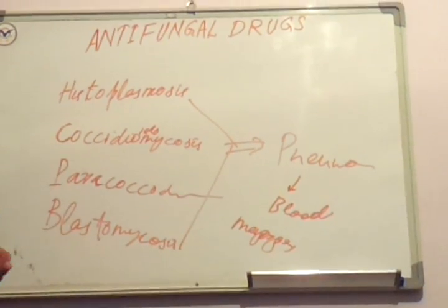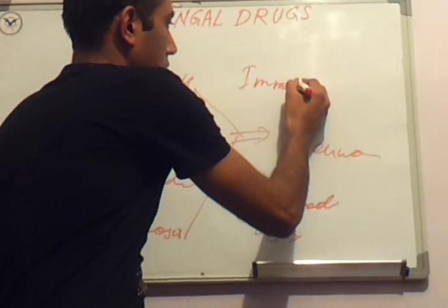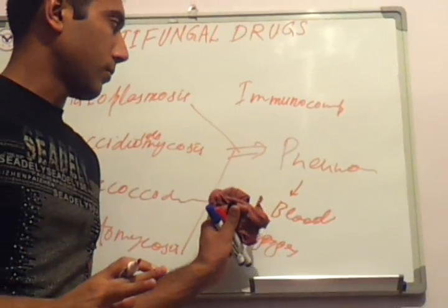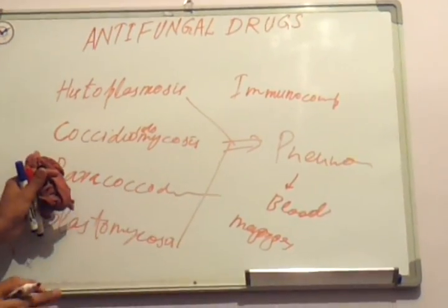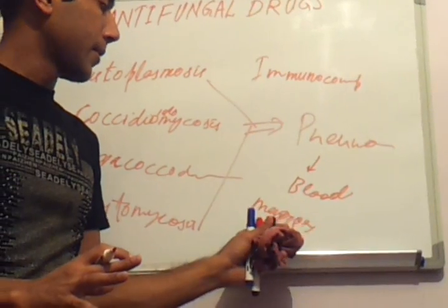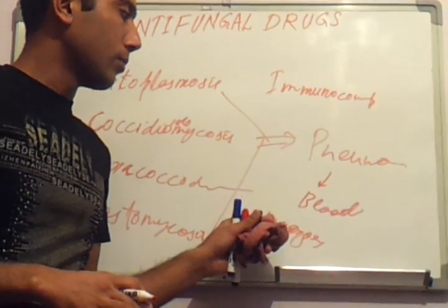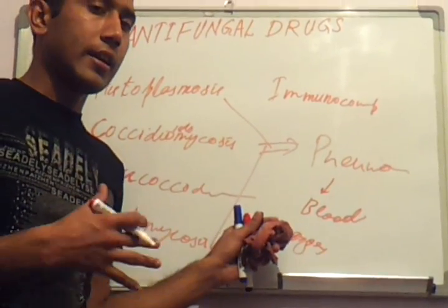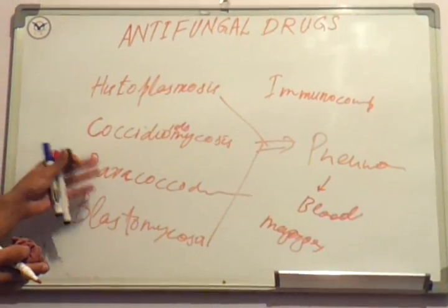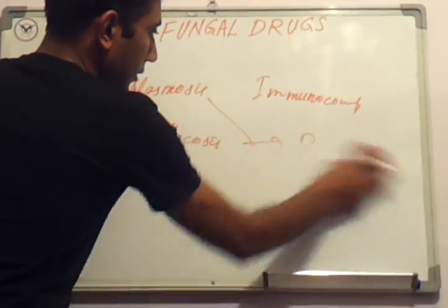These four fungi are present mostly in immunocompetent persons — those who have a normal immune system. They can cause pneumonia, meningitis, pharyngitis, bone infections, and can also mimic TB-like infection with granuloma formation inside the lungs. Importantly, these fungi cannot transmit from one person to another via inhalation.